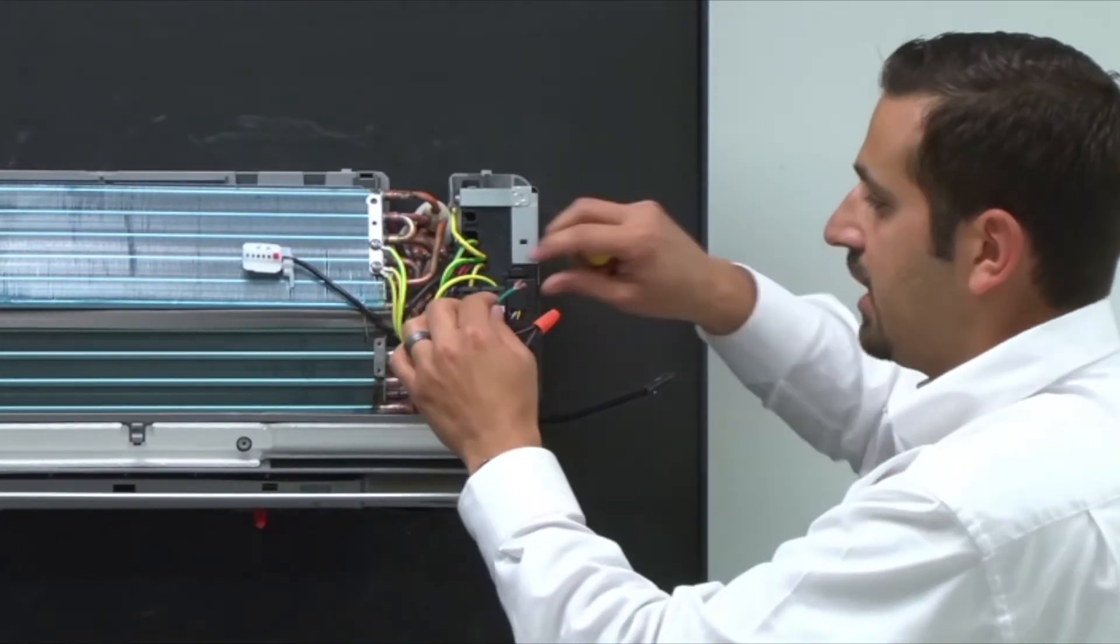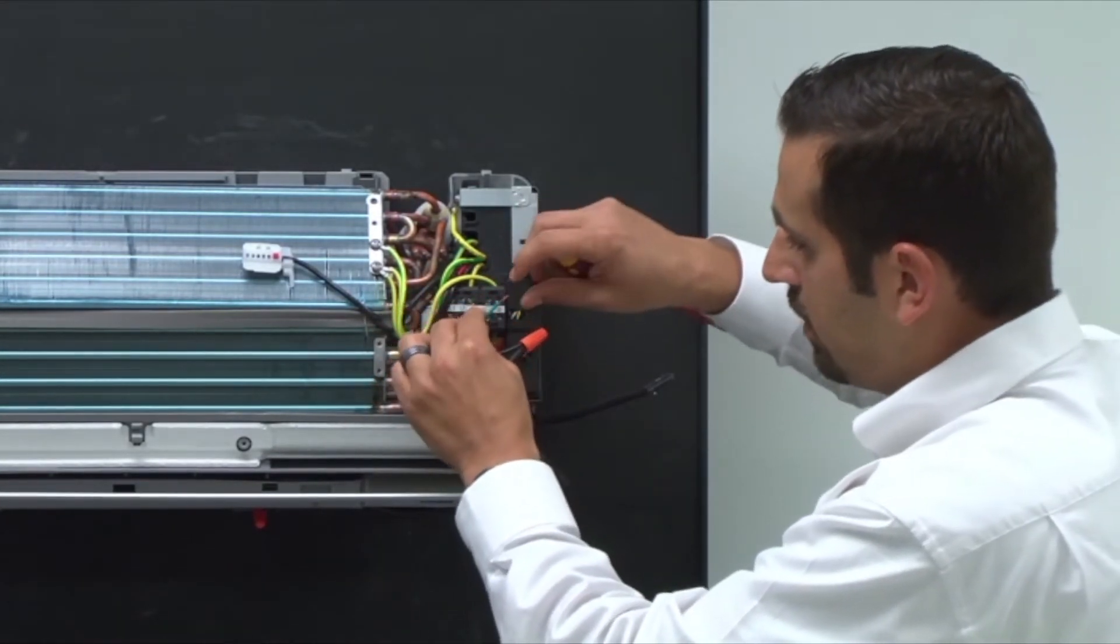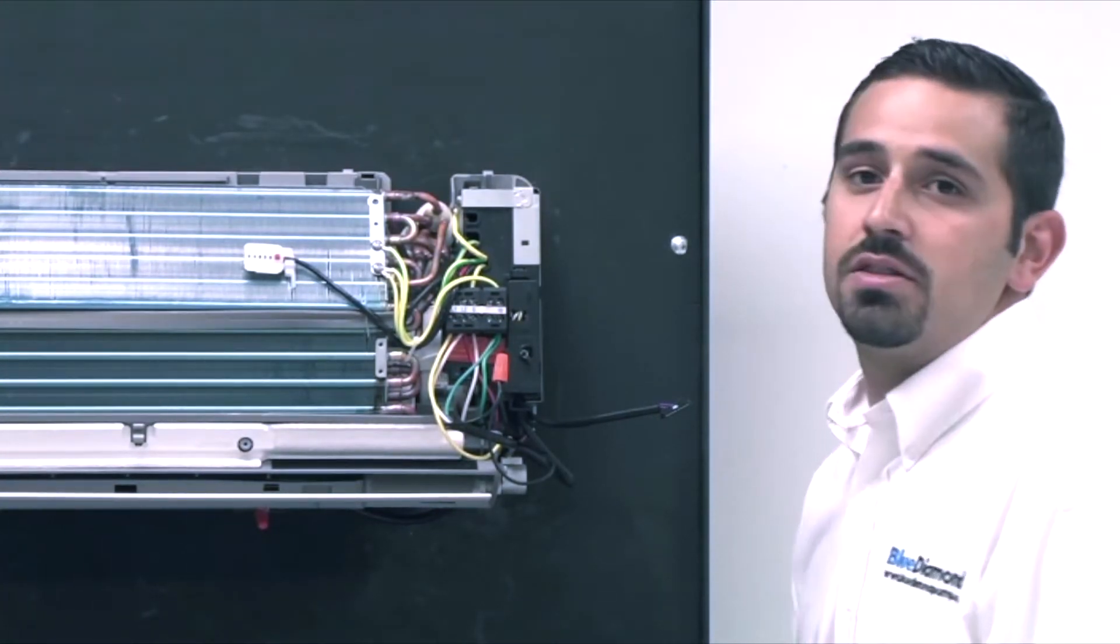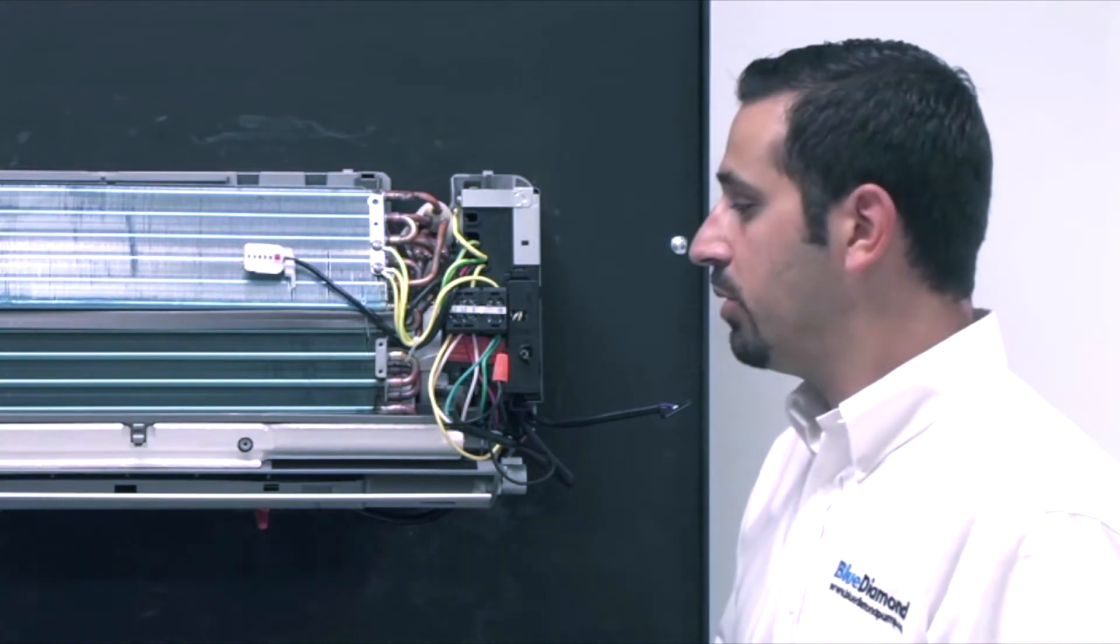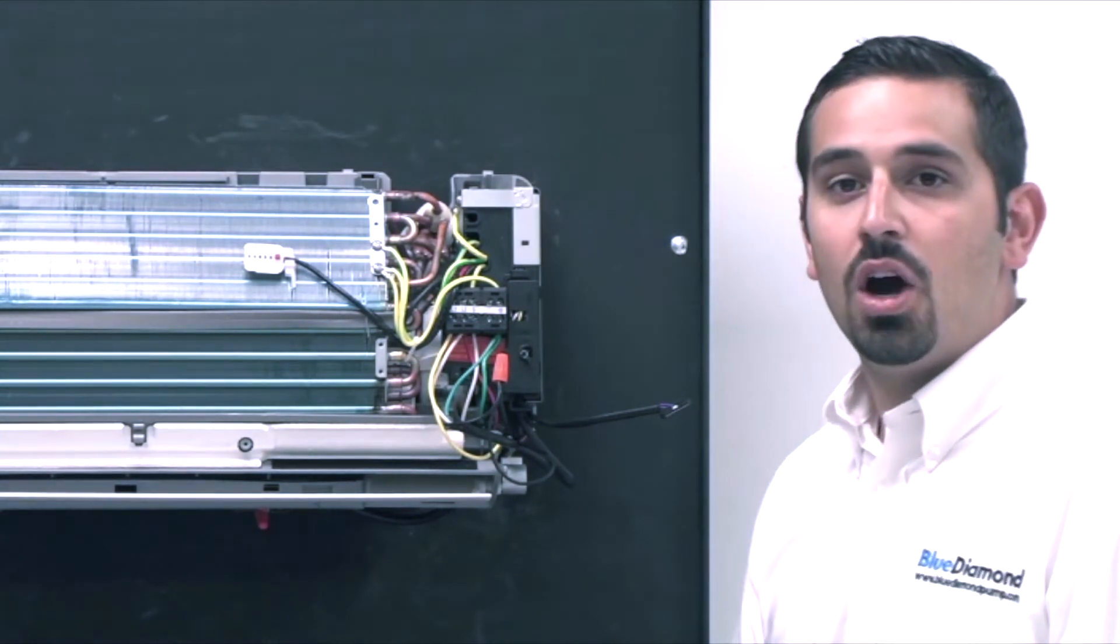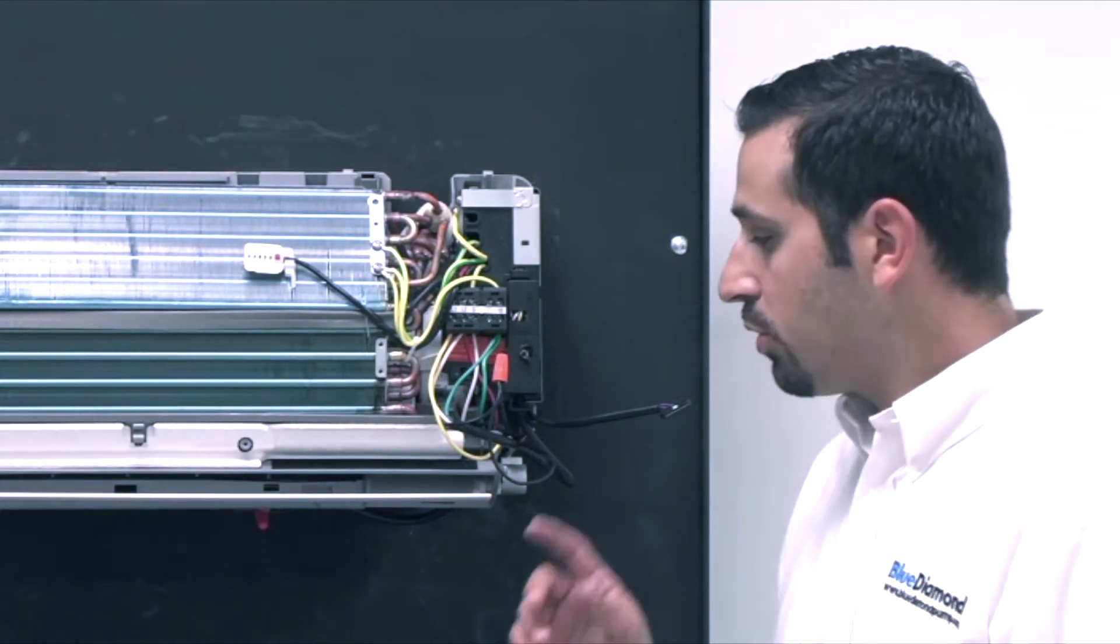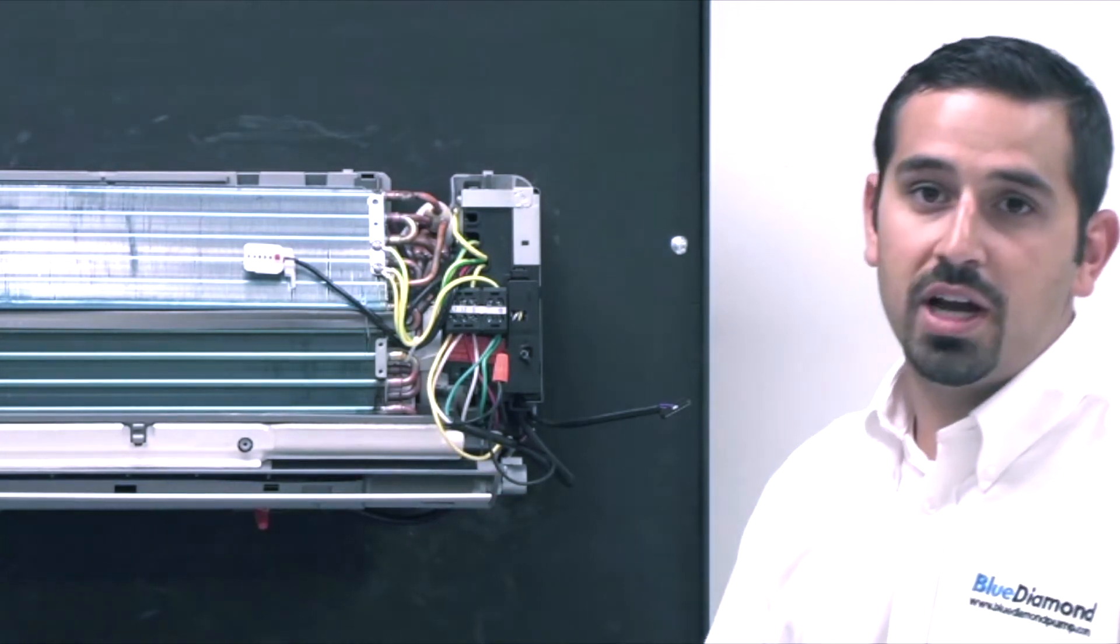Lastly, we will take the green and that will be our ground. We just want to make sure that everyone understands that we are not running L2 or S through the pump. The only thing we will break with the Blue Diamond pumps is your L1. L1 will run through the pump. Use our normally closed contact to bring the voltage back to your air handler.